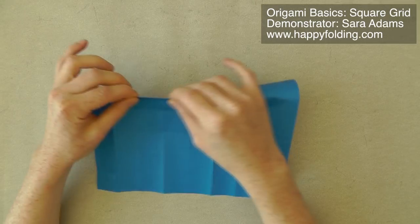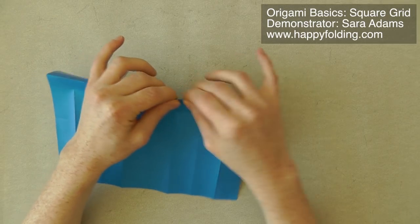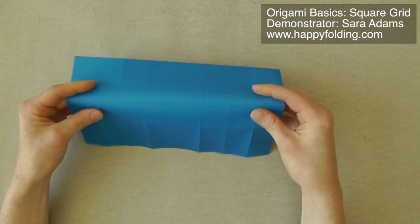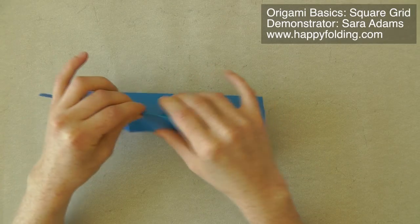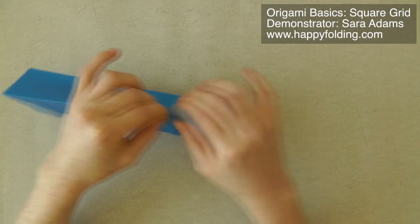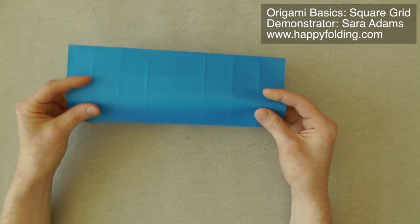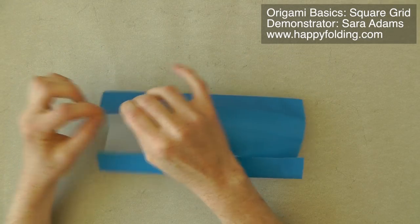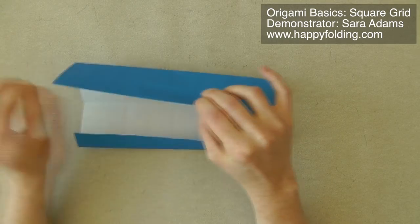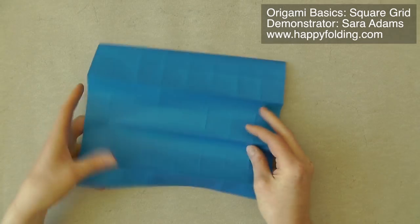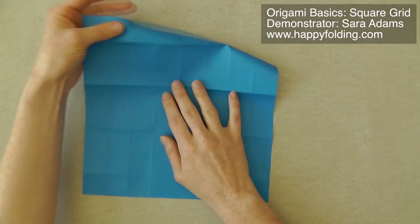If you needed a 16 by 16 grid, then now you would make all of the valley folds with the white side up, so that every second crease was first creased as a mountain fold on the color side up. But for tessellations, you get the nicest finish, in my opinion, if you do valley folds throughout.